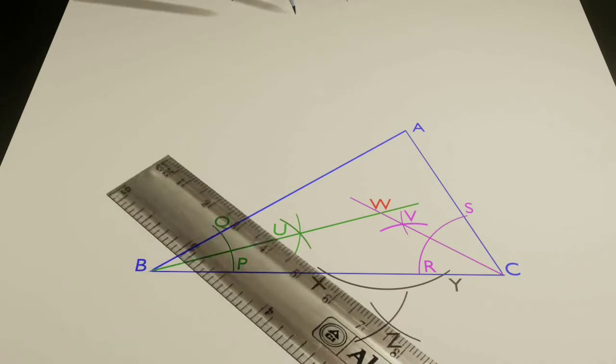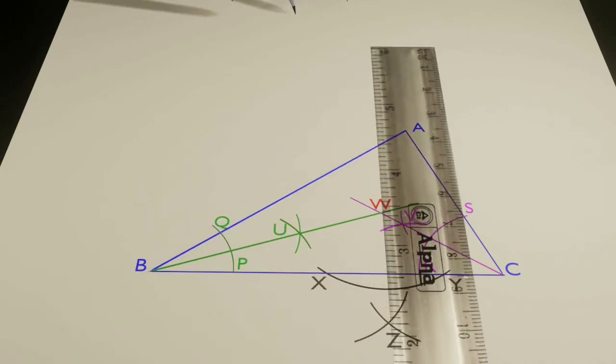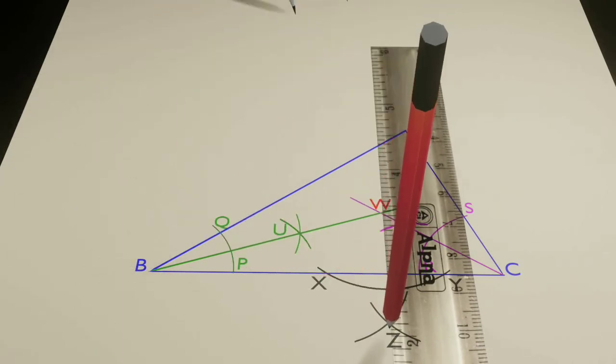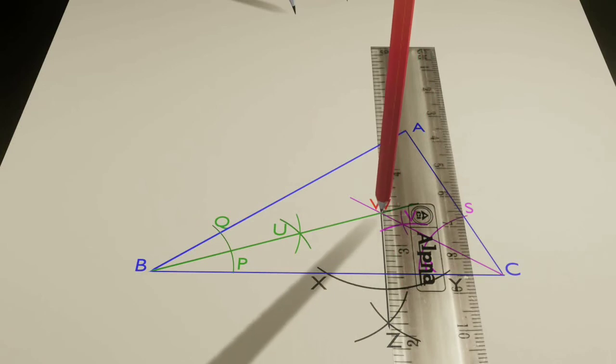Now with the help of a ruler and a pencil, point Z and point W are connected. This line intersects the arm BC at point N. Thus WN will be the radius of the inscribed circle.